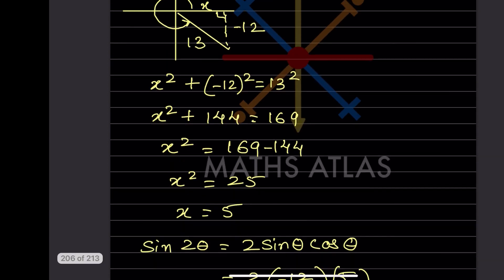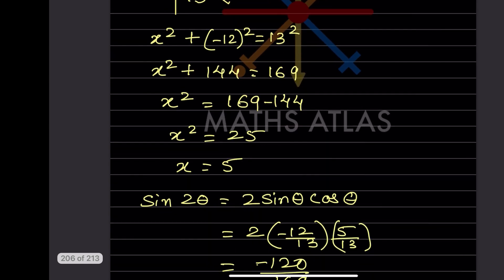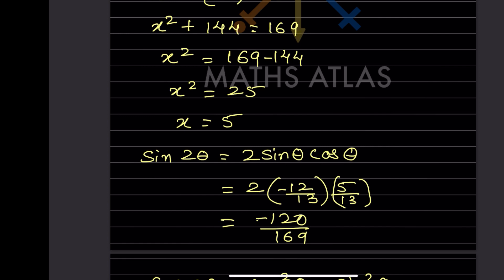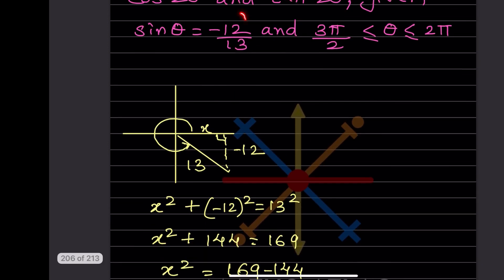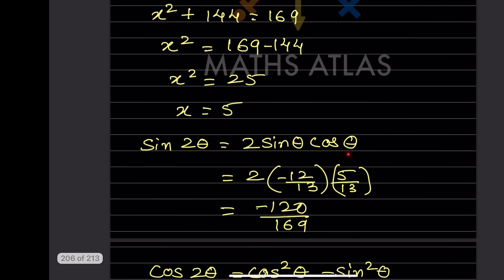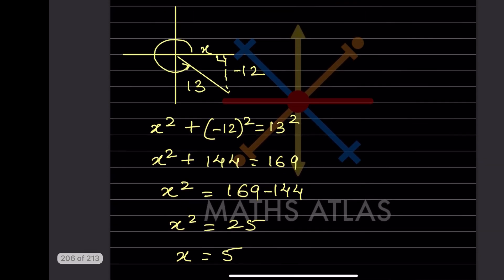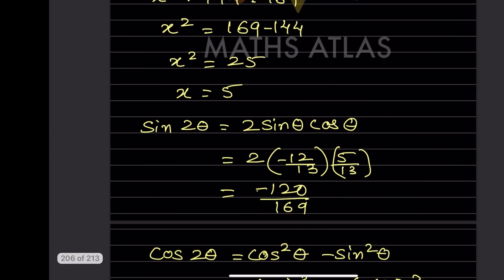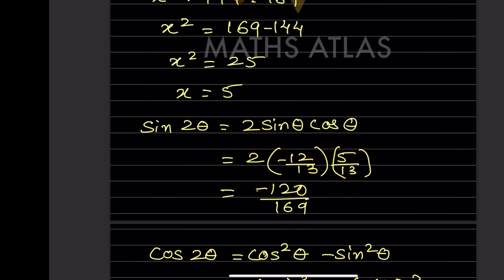For sin2θ = 2sinθcosθ: sinθ = -12/13 (given) and cosθ = adjacent/hypotenuse = 5/13. So sin2θ = 2 × (-12/13) × (5/13) = -120/169.